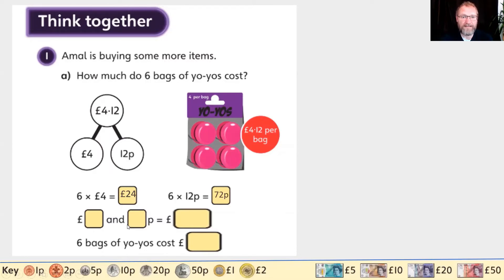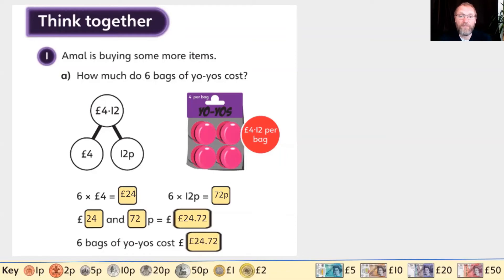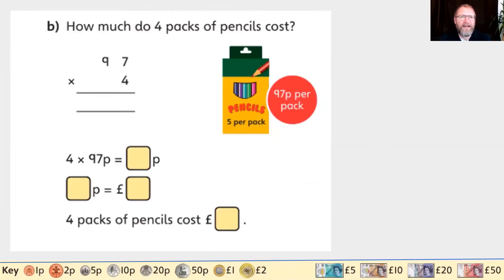Six times 12 is 72, so six times 12 pence is 72 pence. Putting these answers together into pounds and pence: 24 pounds and 72 pence. So six bags of yoyos cost 24 pounds and 72 pence.